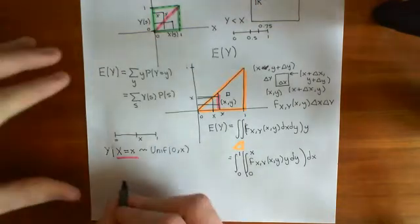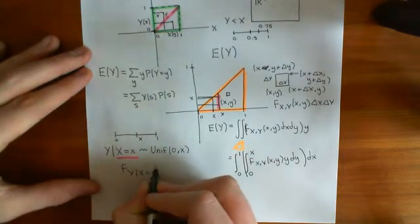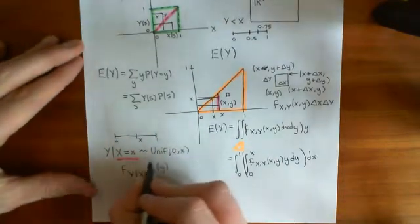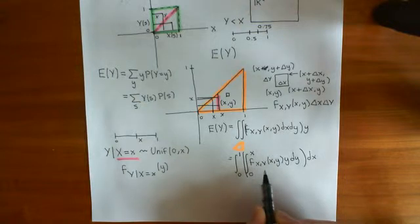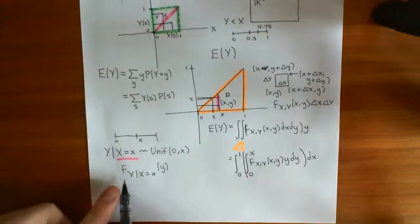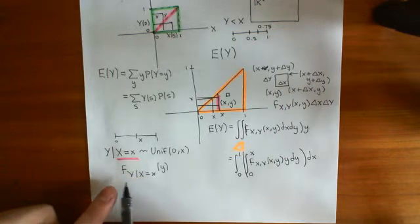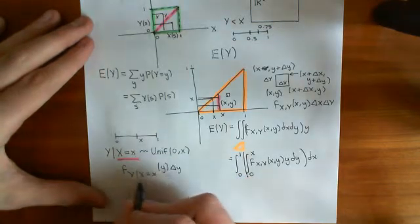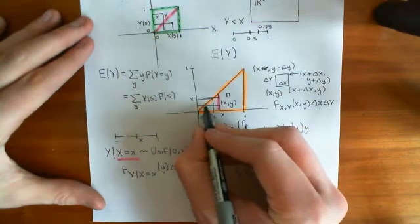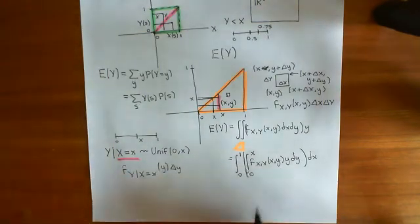How would I actually calculate the probability density function of the random variable Y given X equals little x, evaluated at some value y? I know it's uniformly distributed on 0 to x, but how would I get that from the joint probability distribution? The definition of a probability density function means that if I multiply it by some little interval delta y, that gives me the probability of being within that interval delta y. So I need to work out how to get that probability in terms of the joint distribution — and we'll continue that in the next video.